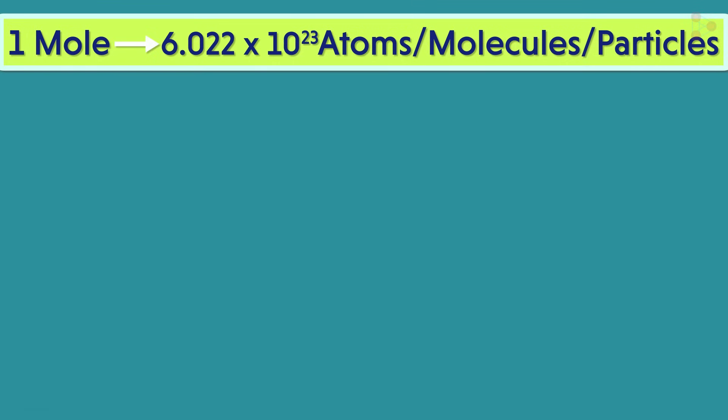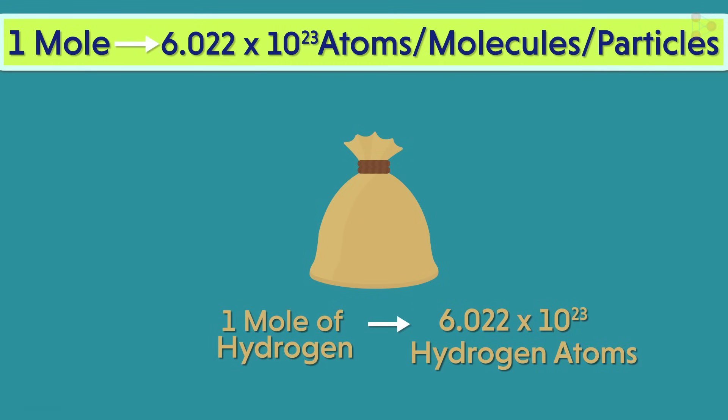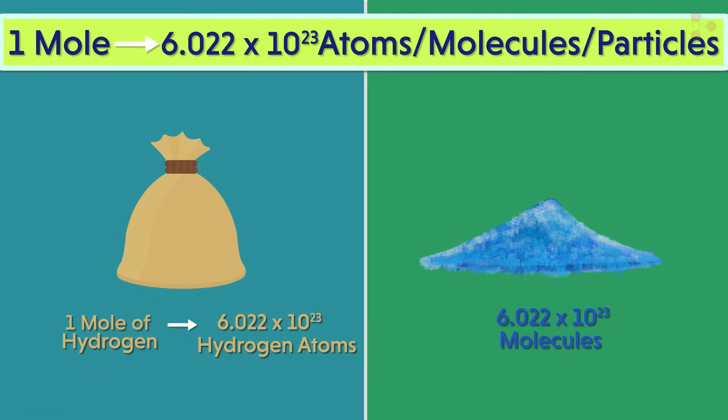That means if we take, for example, a bag containing 6.022 times 10 raised to 23 hydrogen atoms, then can we say it's 1 mole of hydrogen? Yes, that's right. Similarly, 6.022 times 10 raised to 23 molecules of any compound like copper sulphate is 1 mole of copper sulphate. Simple, isn't it?